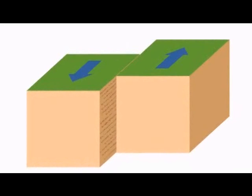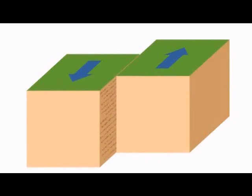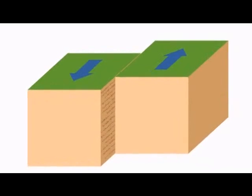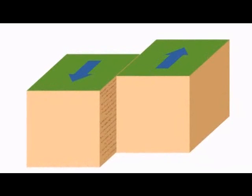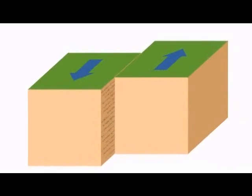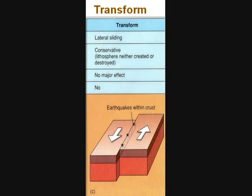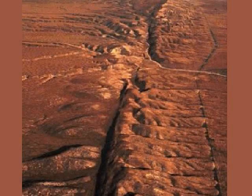The third type of plate movement is called transform. In this movement, the two plates merely move from side to side — sideways in a lateral movement. This movement neither creates nor destroys crust. This movement moves the plates back and forth, causing violent earthquakes.